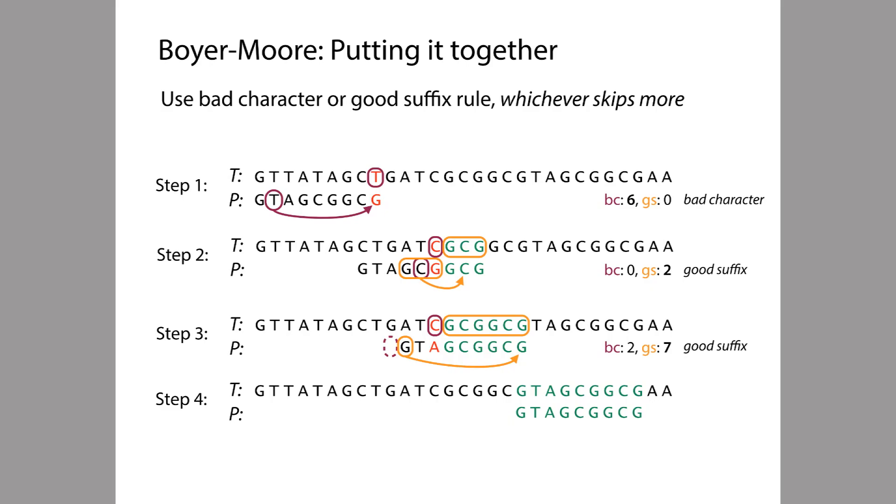So we just saw three steps where we used the bad character rule and the good suffix rules together. And we'll implement this in the upcoming practical session. So you might wonder, how much of an improvement is Boyer-Moore over naive exact matching?